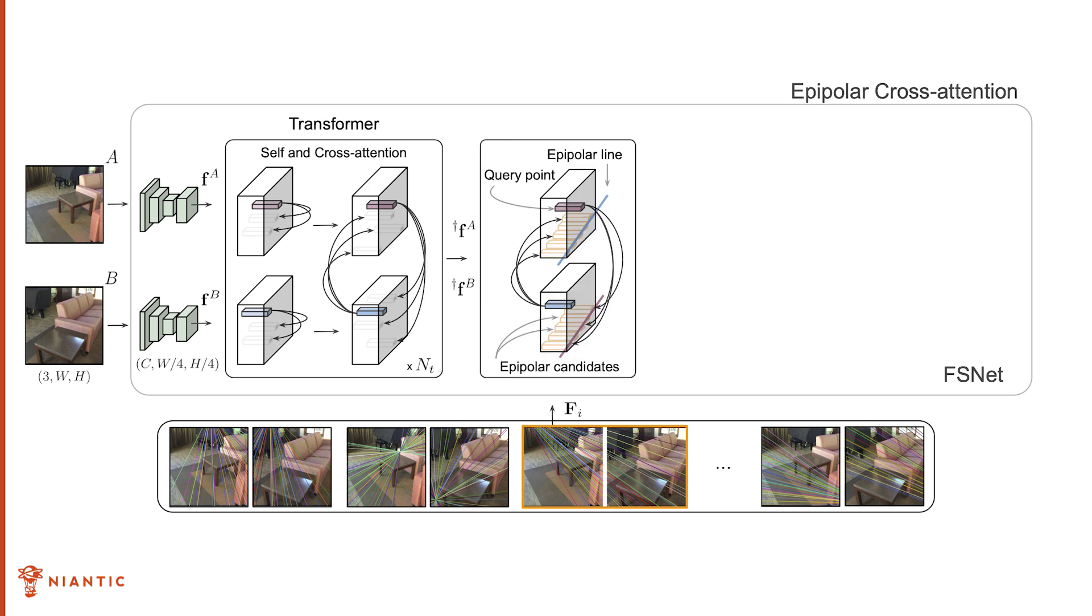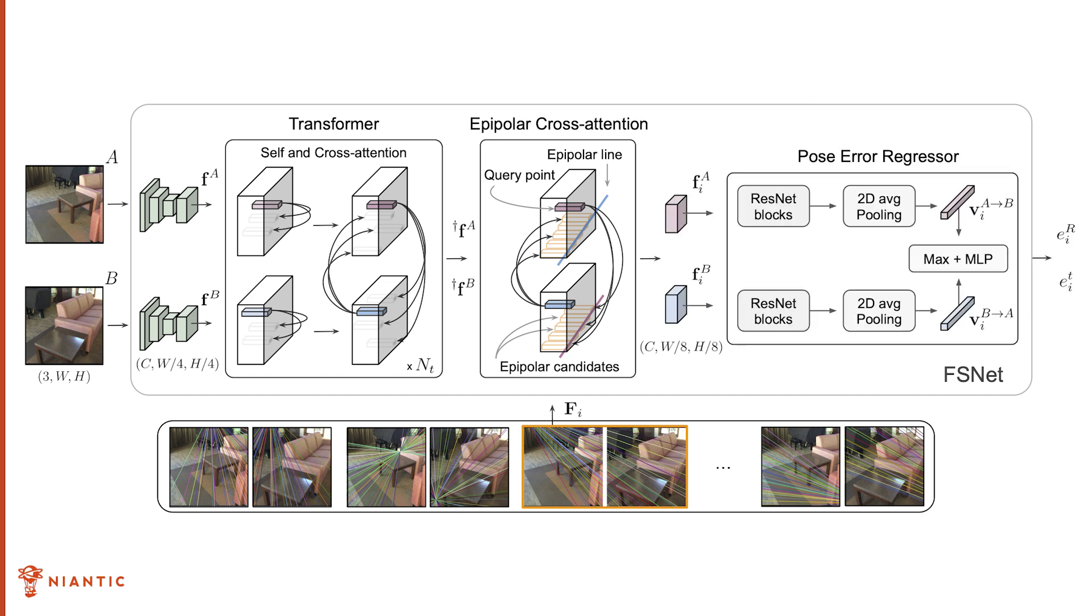The epipolar cross-attention network embeds the fundamental matrix hypothesis into the feature maps. The cross-attention layer is limited to features that lie on the epipolar line, so the quality of the fundamental matrix impacts the coherence of the feature maps. The final block predicts the rotation and translation error for the input fundamental matrix.